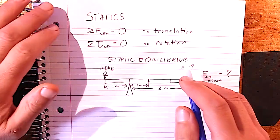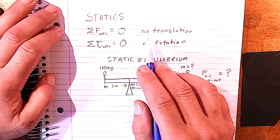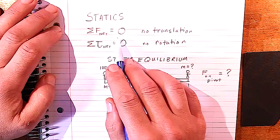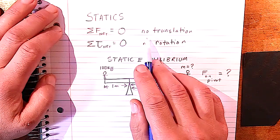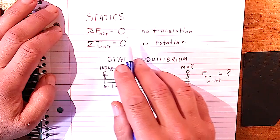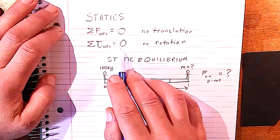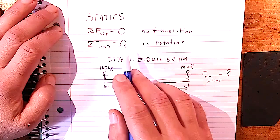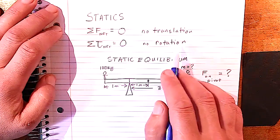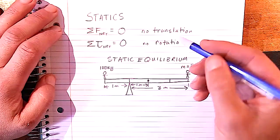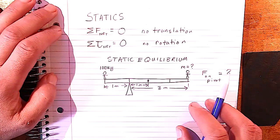Statics is defined as when the net torque and the net force are both zero, and there's no translation. When the net force is zero, the acceleration is zero, but an object could be at rest or moving at constant velocity. Here we're defining it as not moving at all. Net torque being zero means alpha is zero — not rotating or rotating at constant angular velocity — but we require it's not doing that either. These two conditions together give static equilibrium.